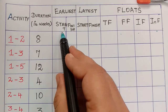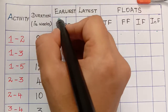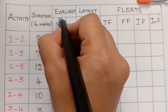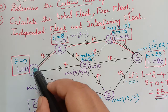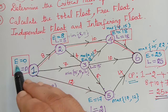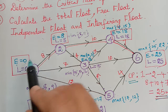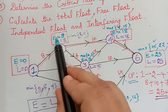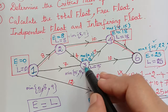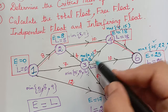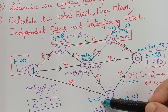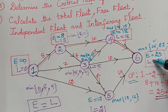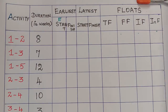We have already drawn the network diagram and found the critical path, with a project duration of 25 weeks. The earliest start values come from the E values calculated in the network diagram: event 1 has E = 0, event 2 has E = 8, event 3 has E = 12, event 4 has E = 18, event 5 has E = 17, and event 6 has E = 25.